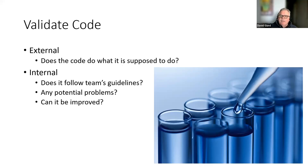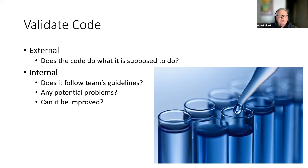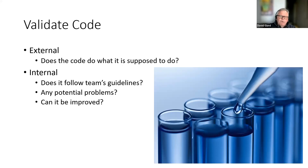But validating code goes beyond external behavior. There are internal things too — coding standards, naming conventions, file locations, class sizes. We also want to check for potential problems: maybe the code works but uses too much memory, or could break down under simultaneous users. And even if everything works and is scalable, there may be improvements — a more efficient way to write it, something that makes it run faster. The reviewer has the potential to validate much more than just whether the author did what they were asked.